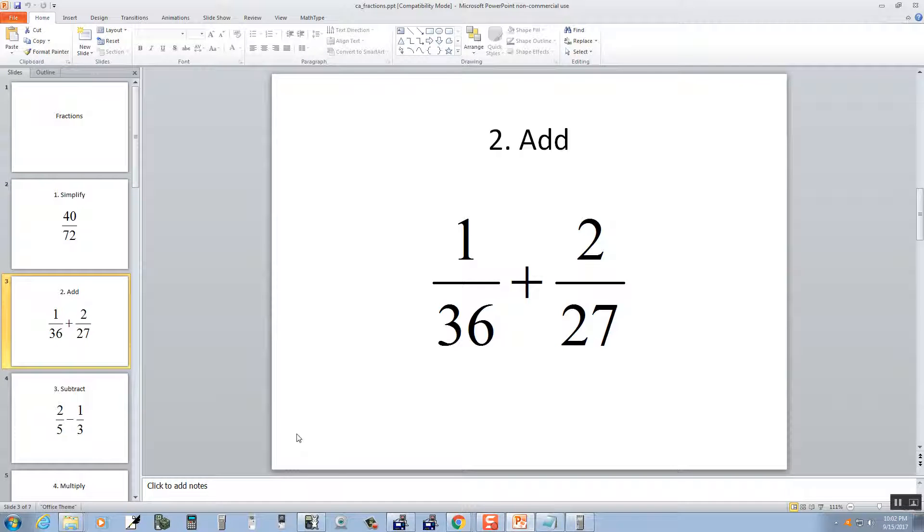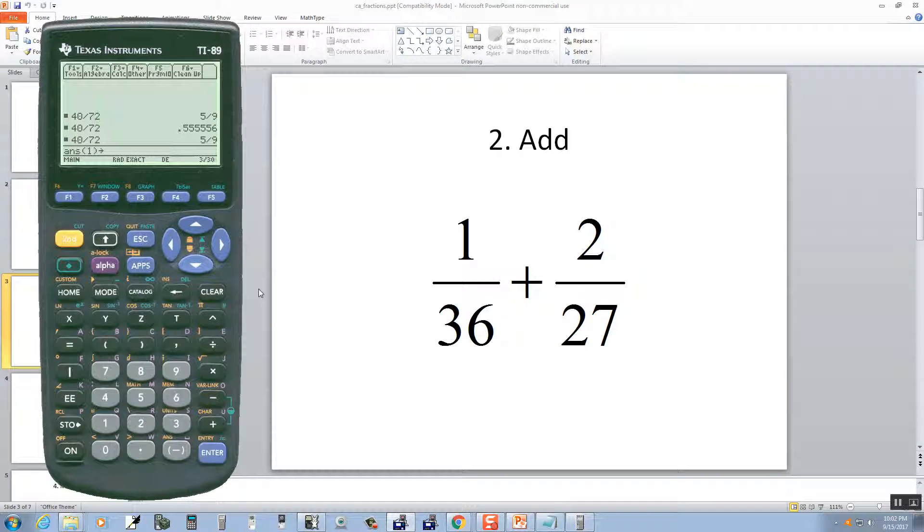Okay, let's take a look at our second item here, addition. Okay, so I'm going to do 1 divided by 36, plus 2 divided by 27. Enter. And you see we've got 11 over 108.